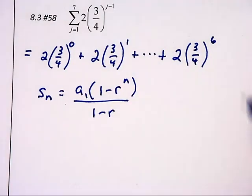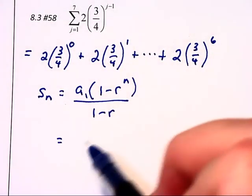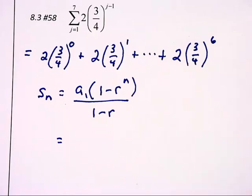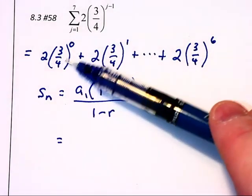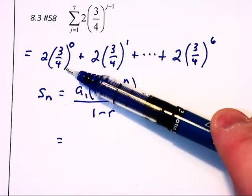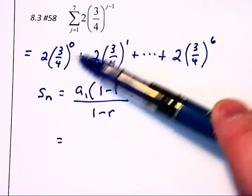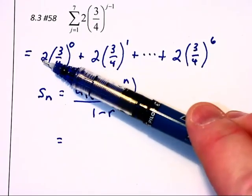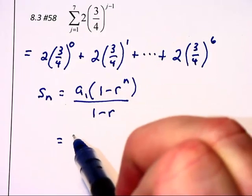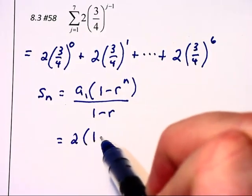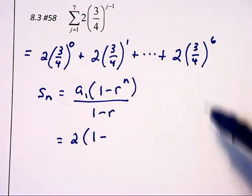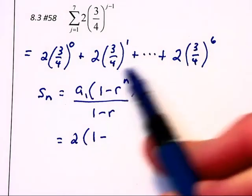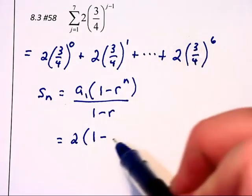Now let's substitute some values in. This is going to equal a1. Well, we need to go to our formula here. When we find the first term, anything to the 0th power is 1, times the 2, so our first term is 2, times 1 minus the ratio here, which is 3 fourths. Notice we're multiplying by 3 fourths to go from term to term to term.